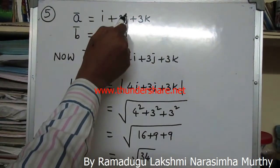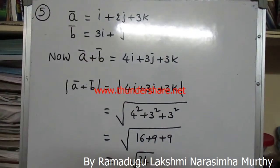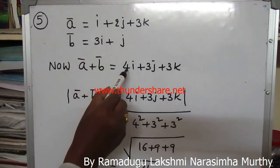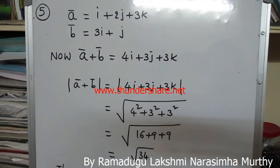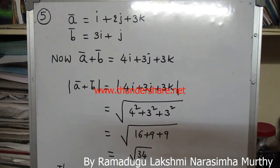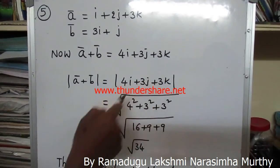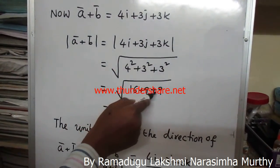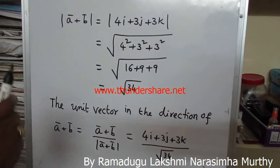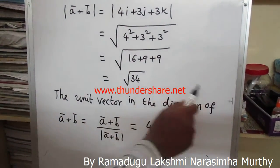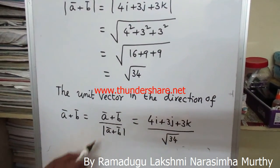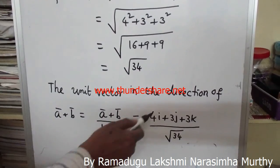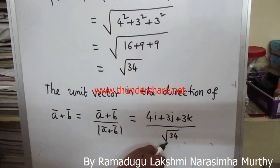Given ā = i + 2j + 3k and b̄ = 3i + 2j. The sum ā + b̄ = 4i + 3j + 3k. The modulus of (ā + b̄) = |4i + 3j + 3k| = √(4² + 3² + 3²) = √(16+9+9) = √34. The unit vector in the direction of ā + b̄ equals (ā + b̄) divided by its modulus = (4i + 3j + 3k) / √34.